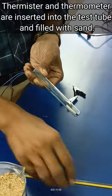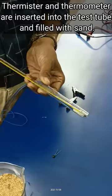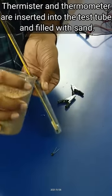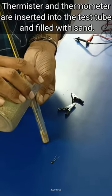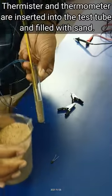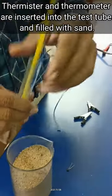A glass is filled with hot water of temperature about 80 degree Celsius. A thermistor connected to a digital multimeter in resistance mode as ohmmeter, a thermometer inserted in a test tube filled with sand and placed in the hot water bath as shown in the figure.